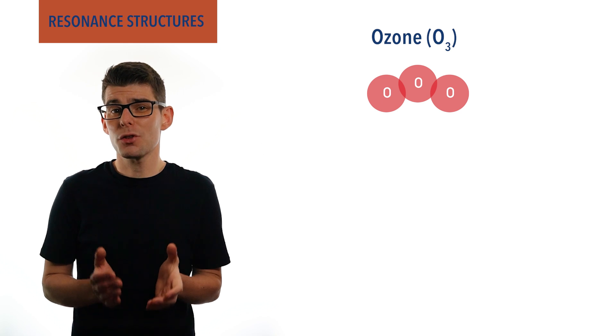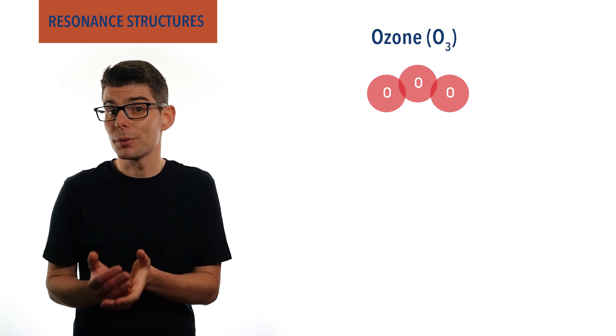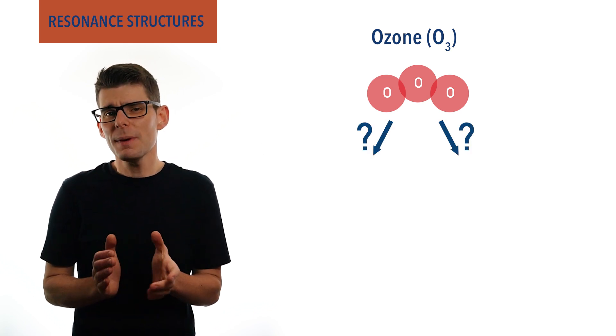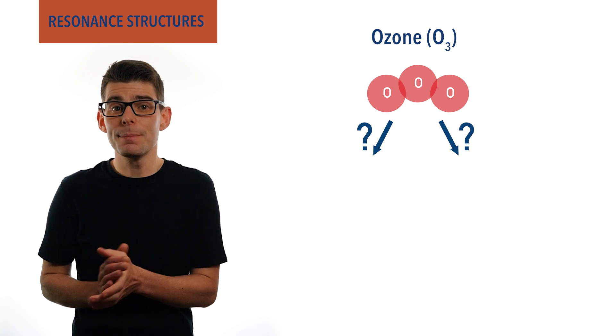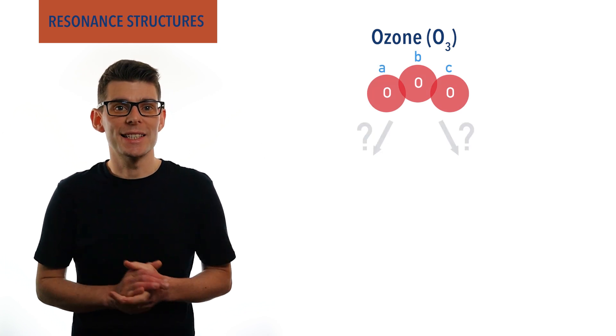If we draw this out, there are actually two different ways we could represent the bonding. To make things easier to follow, let's label each oxygen atom as A, B and C.